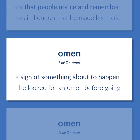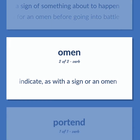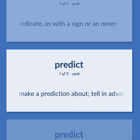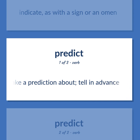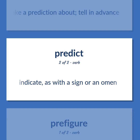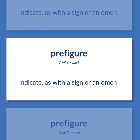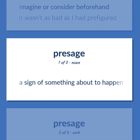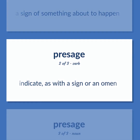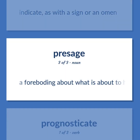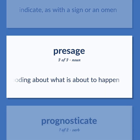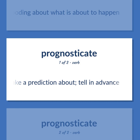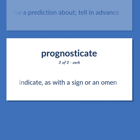Omen / Portend / Prefigure / Presage: A sign of something about to happen. Example: He looked for an omen before going into battle. Indicate as with a sign or an omen. Make a prediction about; tell in advance. Indicate as with a sign or an omen. Imagine or consider beforehand. Example: It wasn't as bad as I had prefigured. A sign of something about to happen. Indicate as with a sign or an omen. A foreboding about what is about to happen. Make a prediction about; tell in advance. Indicate as with a sign or an omen.